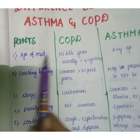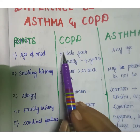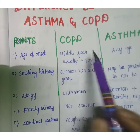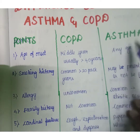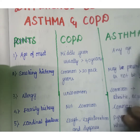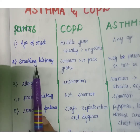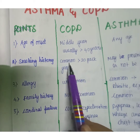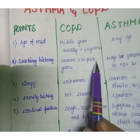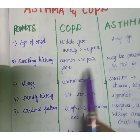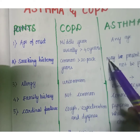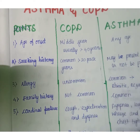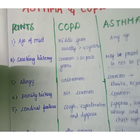The first point is age of onset. In COPD, age of onset is usually middle age, more than 40 years. In asthma, it can occur at any age. Regarding smoking history, in COPD it is common and usually more than 20 pack-years, while in asthma smoking history may or may not be present.